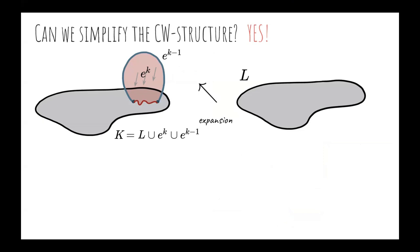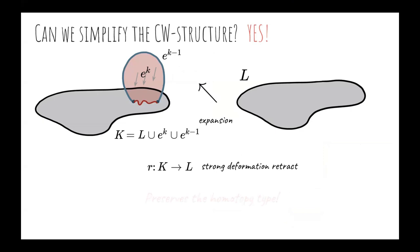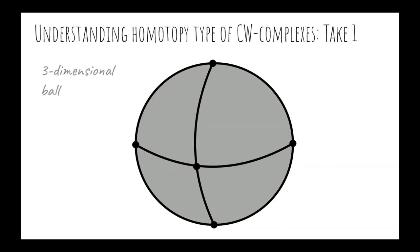In any case, there is a strong deformation retract from K to L that, in particular, preserves the homotopy type. Let's apply these ideas in a concrete example. Let's start with this CW structure associated with a three-dimensional ball. We can identify a pair of cells to perform the first collapse.